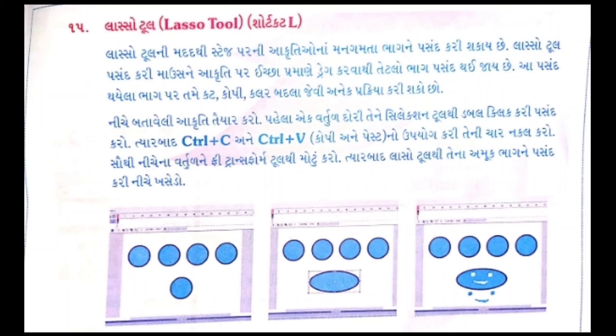આકૃતિ પર આપણે ઈચ્છા પ્રમાણે ક્લિક કરવાથી જેટલો ભાગ પસંદ થાય છે, એ પસંદ થયેલા ભાગ પર કન્ટ્રોલ C અને કન્ટ્રોલ V થી આપડે આકૃતિ ને ફરી વાર કોપી કરીને પેસ્ટ કરી શકીએ. ચાર નકલ આપડે દોરેલી સૌથી નીચે વર્તુળ ની કરી શકીએ.